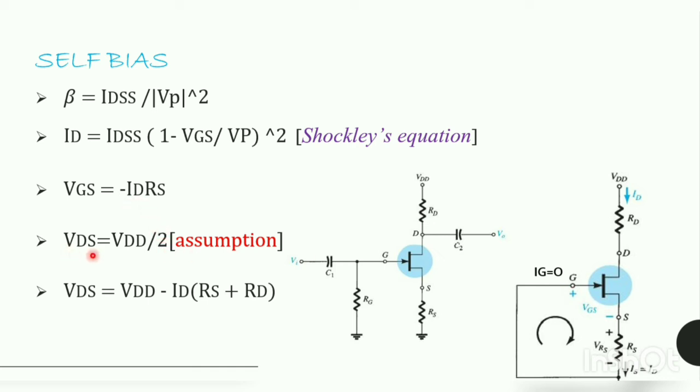By assumption, we have VDS equals VDD by 2. The voltage drain to source is found by VDD minus ID RD minus ID RS.